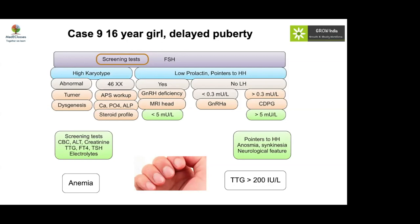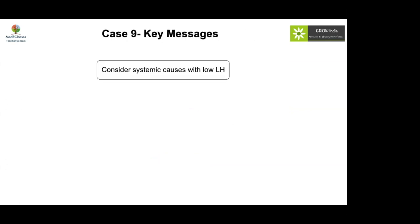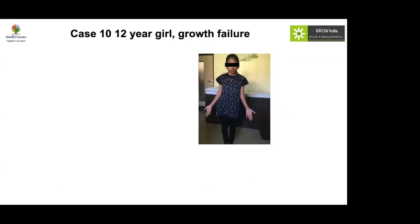Treatment with a gluten-free diet and nutritional supplements was prescribed, which would address this delayed puberty. This is hypogonadotropic hypogonadism secondary to a systemic disorder rather than a hypothalamic-pituitary cause. Key message: always consider systemic causes when LH is low; associated anemia should prompt investigation for nutritional causes such as celiac disease.